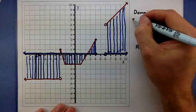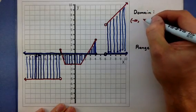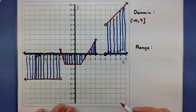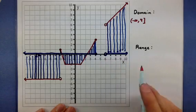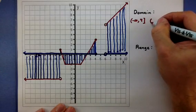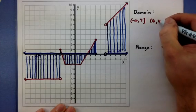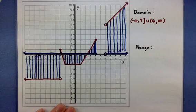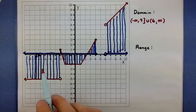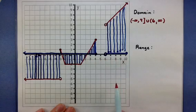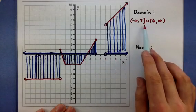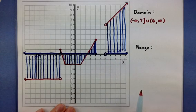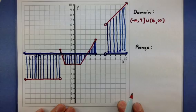So I would say that my domain starts at negative infinity and goes all the way up to 4. Now it includes the 4, so I'm going to use a bracket. And of course, I have a gap. My interval picks up again at 6 and goes to infinity. Now to connect these two intervals, I'm going to use this little U symbol known as the union, and it stands for OR. So my x values could be in this interval or in this interval. And again, notice I'm using the bracket here because I include the 4, and a parenthesis because I do not include the 6. Alright, so that gives us the domain of the piecewise function.